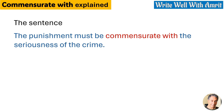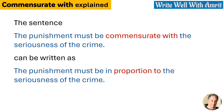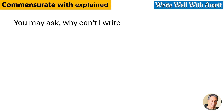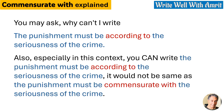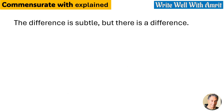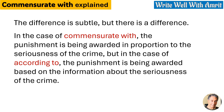The sentence 'The punishment must be commensurate with the seriousness of the crime' can be written as 'The punishment must be in proportion to the seriousness of the crime.' You may ask why you can't write 'the punishment must be according to the seriousness of the crime.' In this context, you can write it that way, but it would not be the same. The difference is subtle: with 'commensurate with,' the punishment is being awarded in proportion to the seriousness of the crime, but with 'according to,' the punishment is being awarded based on the information about the seriousness of the crime.